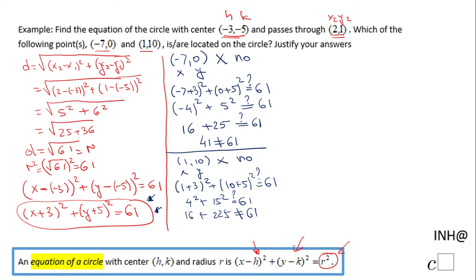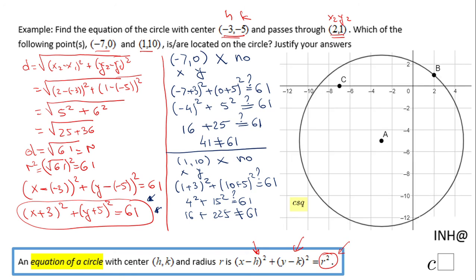Last thing—I want you to see the circle we've been talking about. You can notice that one point is here and it's not on the circle, and the other one is somewhere up here, which is also not on the circle. If you enjoyed this, don't forget to click the like button and come back for more help. Thank you.